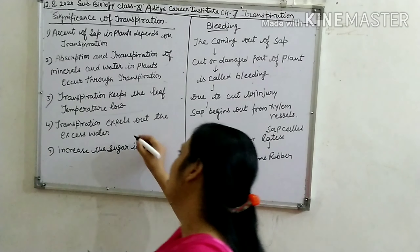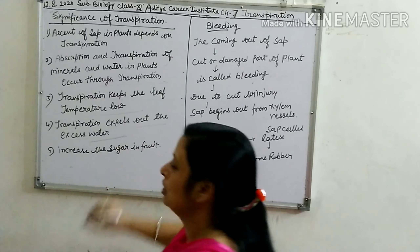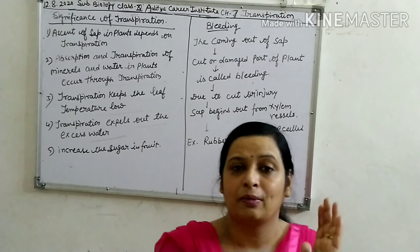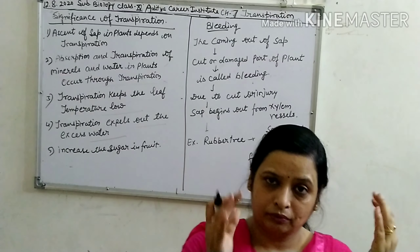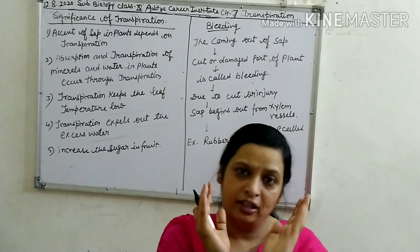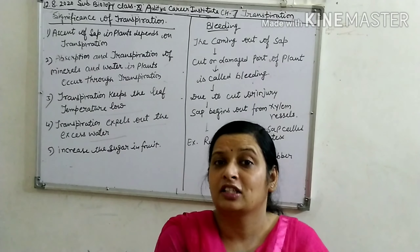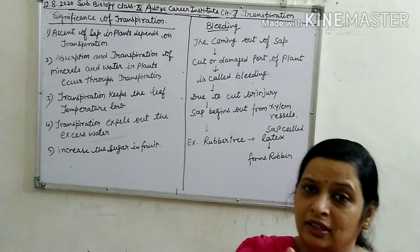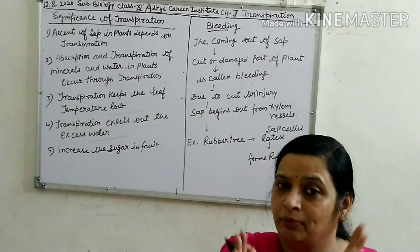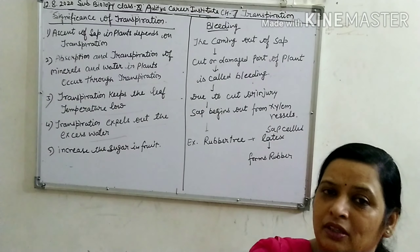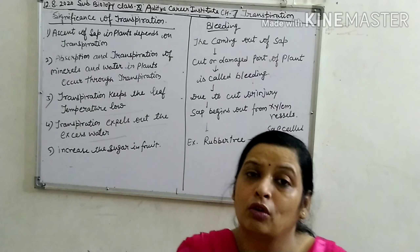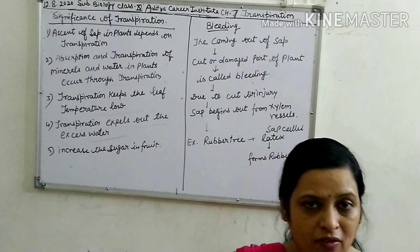Next: transpiration expels out the excess water. When a root absorbs an excess quantity of water, and this excess water is present in the plant, the plant begins decaying. So through the transpiration process, the plant does the work of removing excess water.